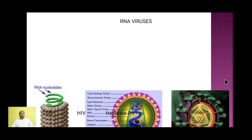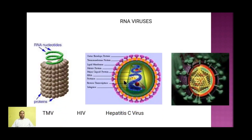Now let's see some prominent examples. HIV and hepatitis C are both human viruses that have RNA as their genetic material. The TMV structure has a single-stranded RNA as its genetic material.